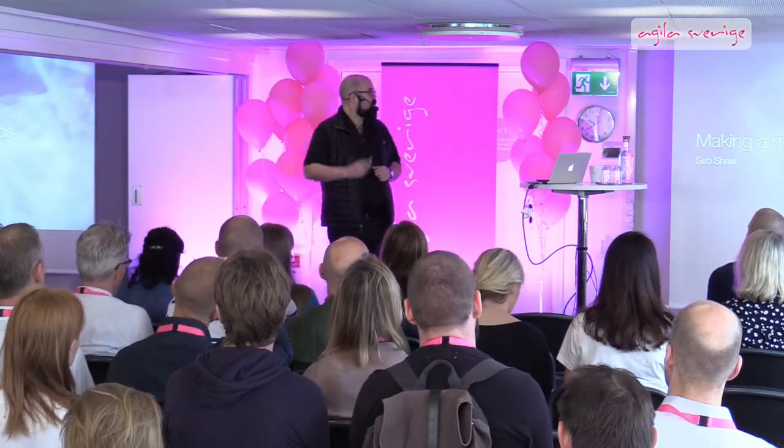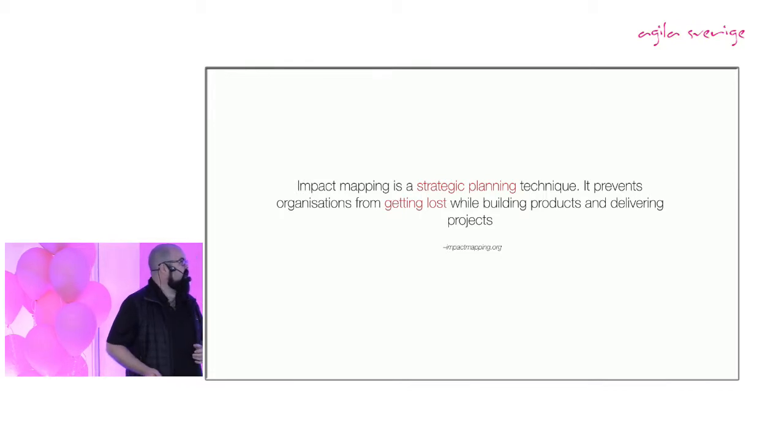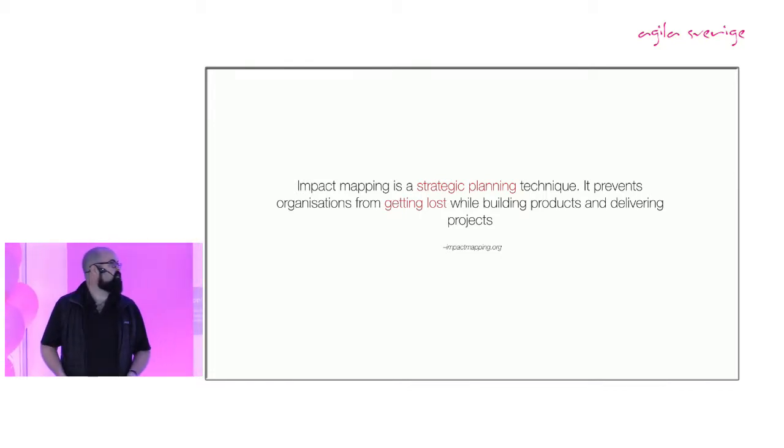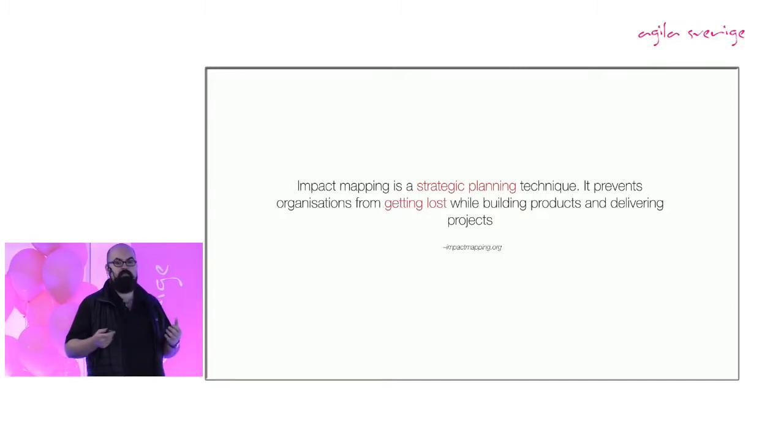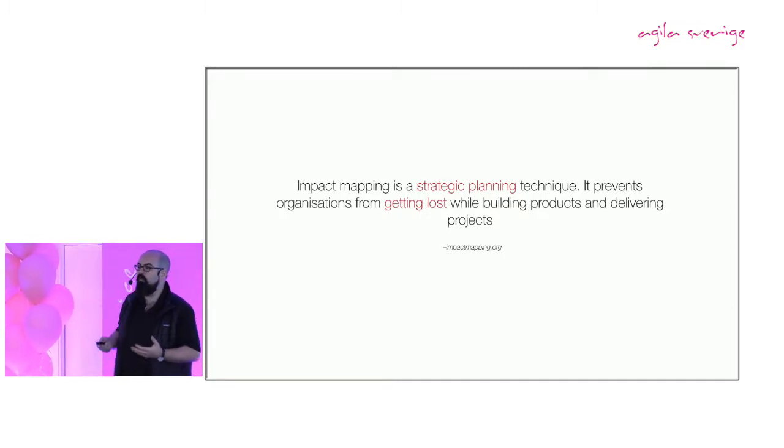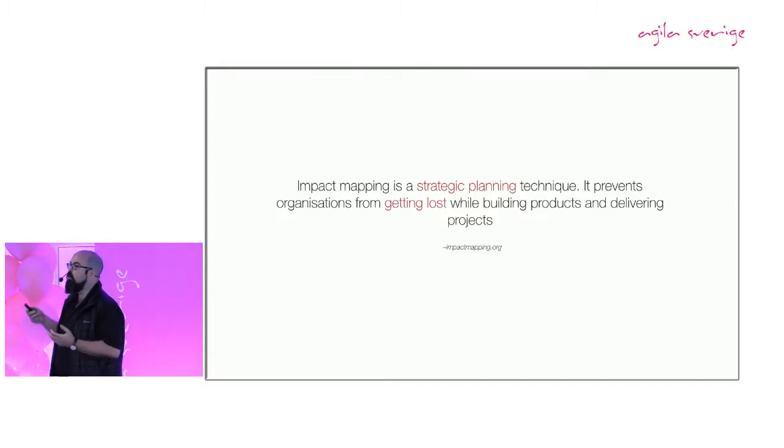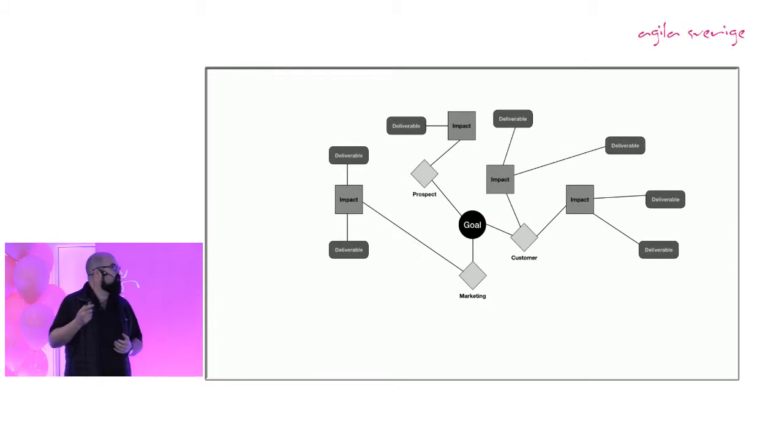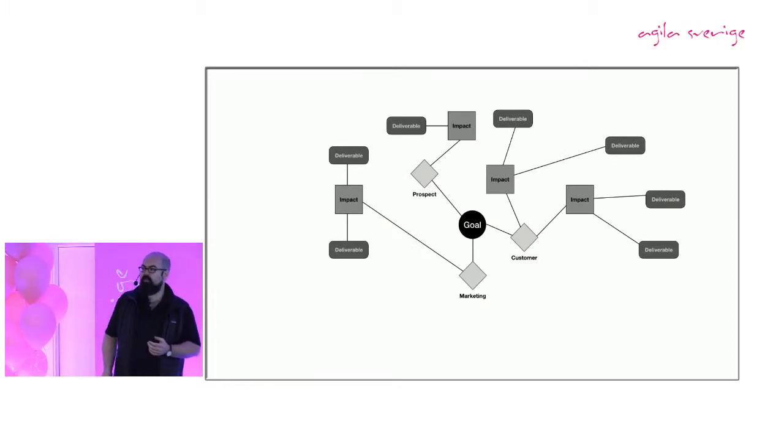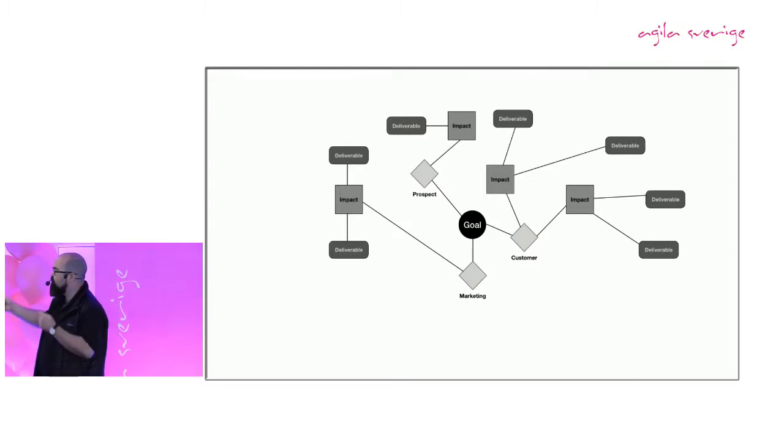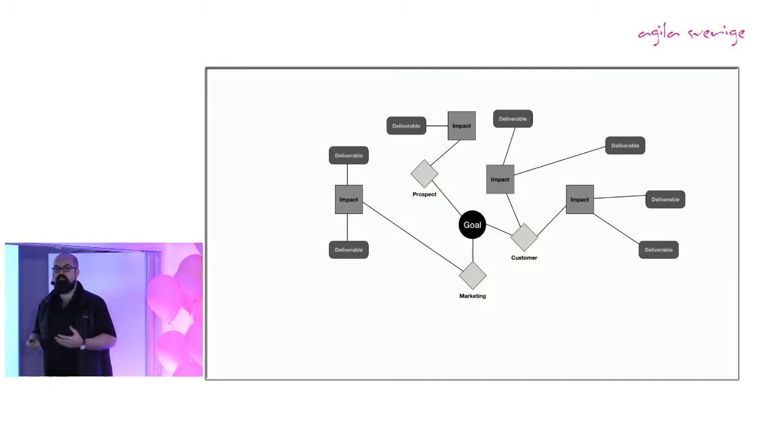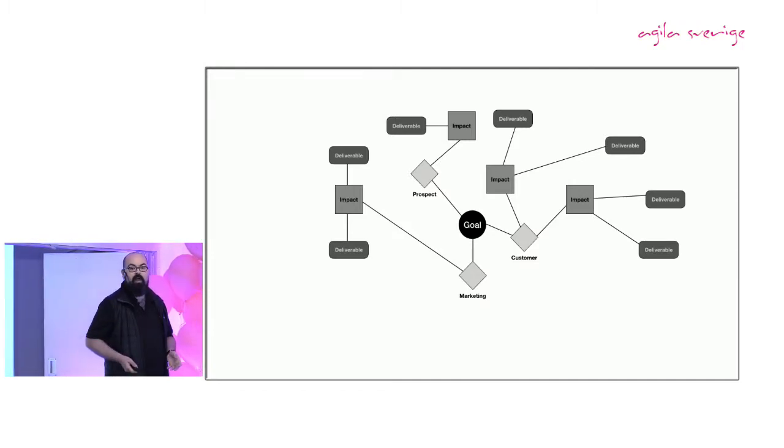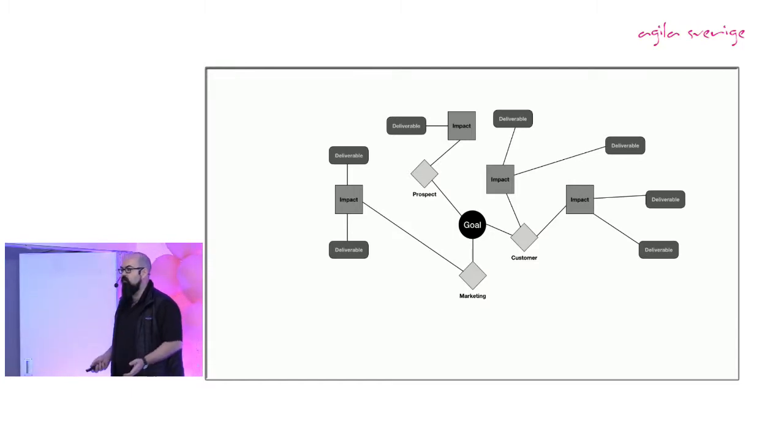Excellent, lots of you. So what is an impact map? It's a strategic planning technique. It prevents organizations from getting lost when building products and delivering products. I find it incredibly useful for helping have conversations with stakeholders, with managers, with the product teams actually working on things around what they're building, how they can prioritize, and to make sure that you are connecting everything back to the central goal. An impact map might look something like this. It's a little bit messy, it's often done up on the wall. You move your post-its around, you figure out as you're going on what it is. You've got your goal, which is what is it you're trying to achieve as a business.